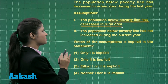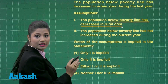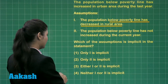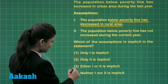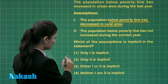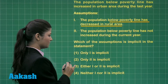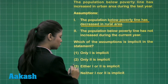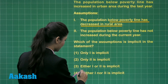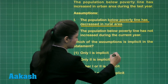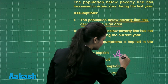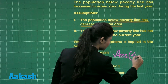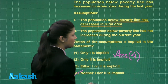None of these assumptions are following the given statement. That is why, out of these four options, the fourth option is the correct answer, which says neither one nor two is implicit. So, the answer for this question is option number four.